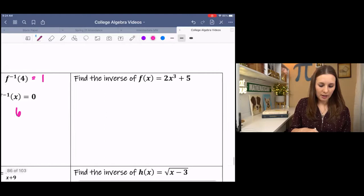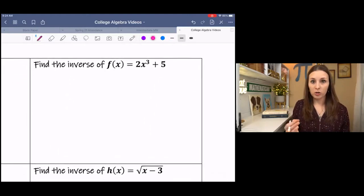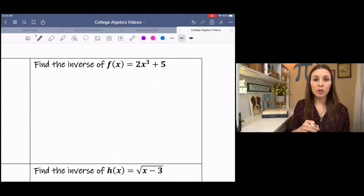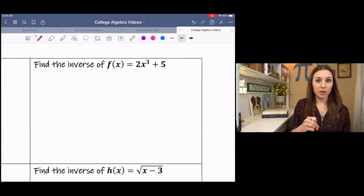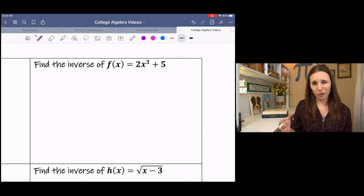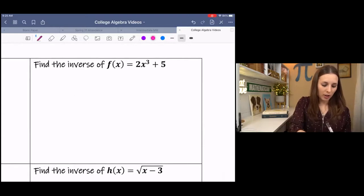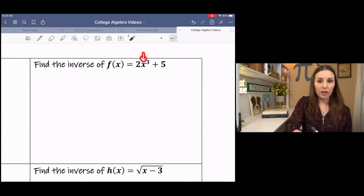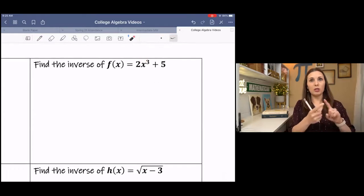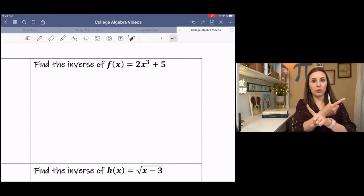In the next example, we have an equation. There's two ways you can go about this. It just depends on the equation for which method you choose. This one's really simple to do this way, and I'll explain. Basically, what you're doing is we're solving for X to isolate it because we're trying to flip-flop the variables.